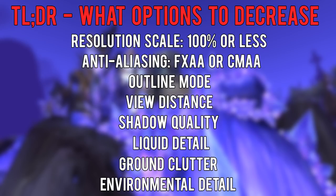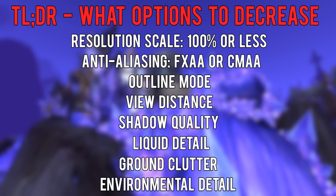If you're here to find out which options you can decrease to see the greatest increase in performance, you can start by making sure your resolution scale is 100%, then change your anti-aliasing to FXAA or CMAA. If you're still looking for better performance, I would start by decreasing these options in this order: Outline Mode, View Distance, Shadow Quality, Liquid Detail, Ground Clutter, and Environmental Detail.